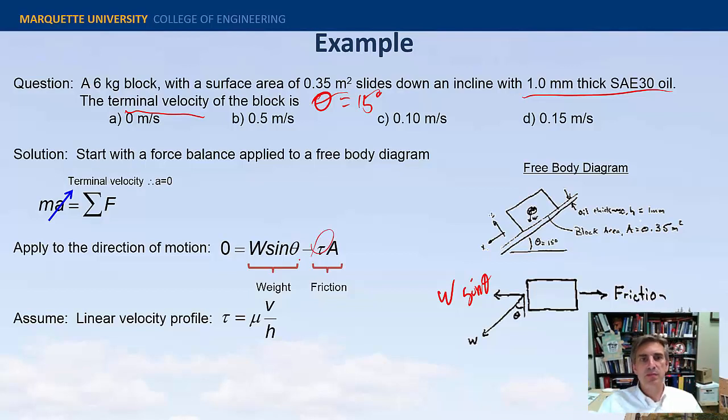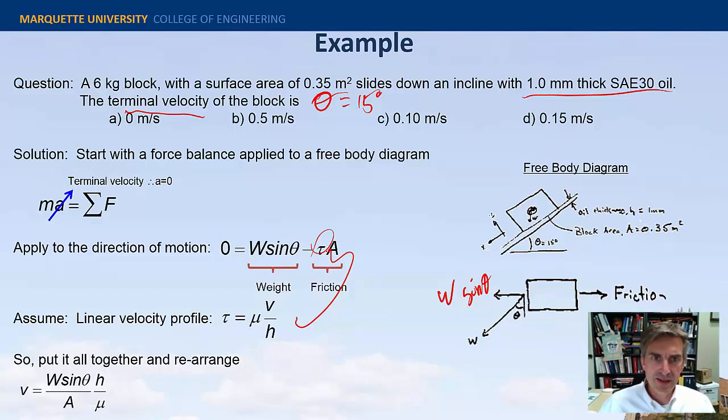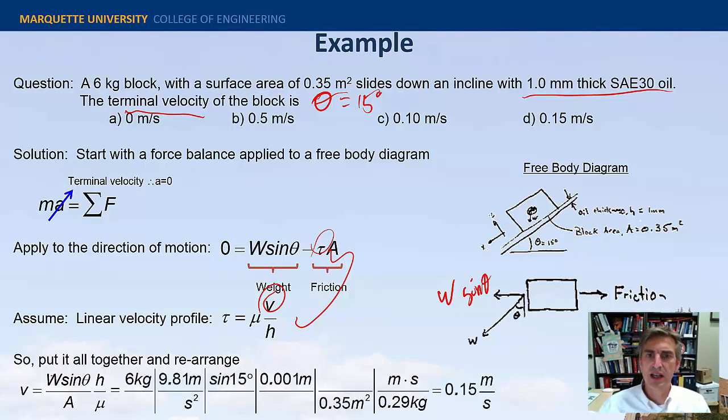If I assume a linear velocity profile, it means I have an expression for this tau. This is a great shoot-from-the-hip estimation of the viscous shear stress there. I can insert this expression into this equation and rearrange for the velocity. I get this expression down here. I was given everything - the weight or mass of the block and the angle and so forth. So I can just do a plug and chug and I get 0.15 meters per second.